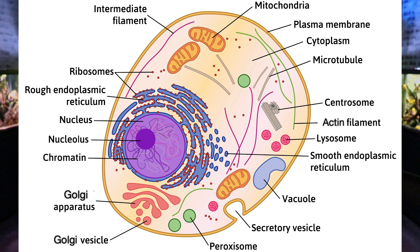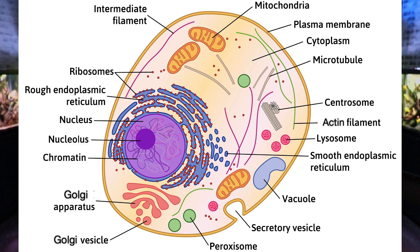There are two organelles responsible for breaking things down inside the cell. The lysosome functions like the cell's stomach — it has an acidic internal environment and can break down food brought into the cell, as well as old internal organelles. The peroxisome has a different role: it detoxifies hydrogen peroxide, converting it into water and oxygen gas. Hydrogen peroxide can be a byproduct of cellular metabolism.